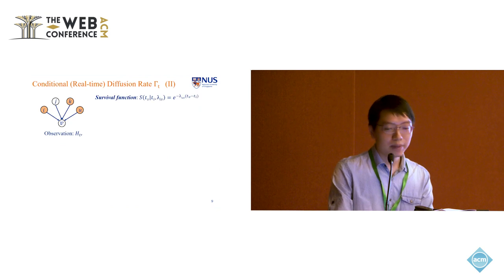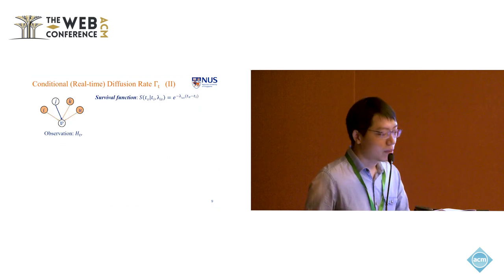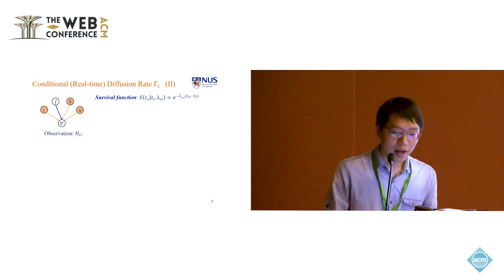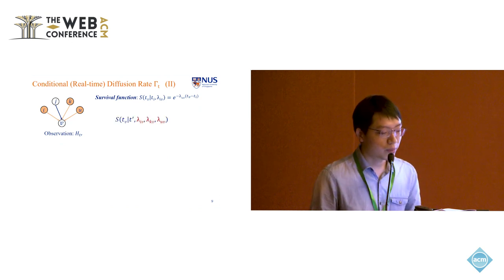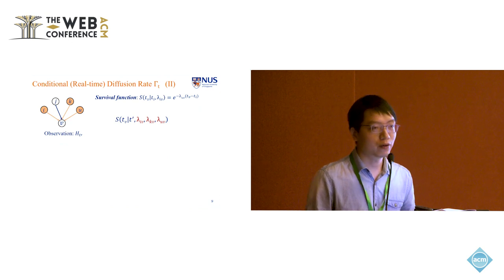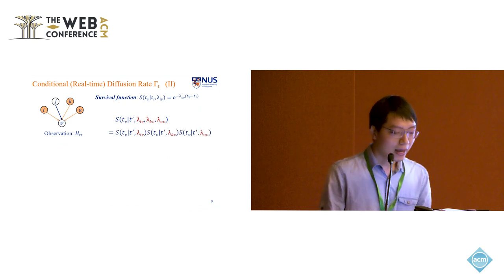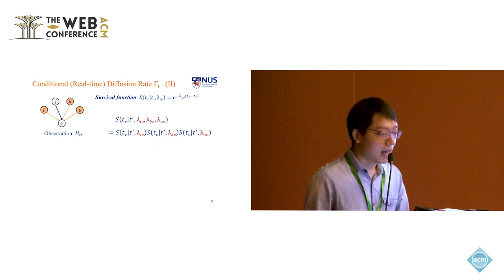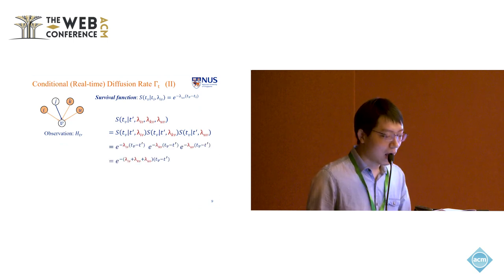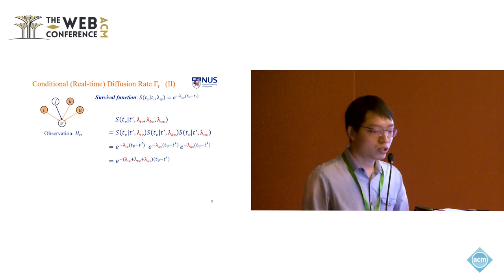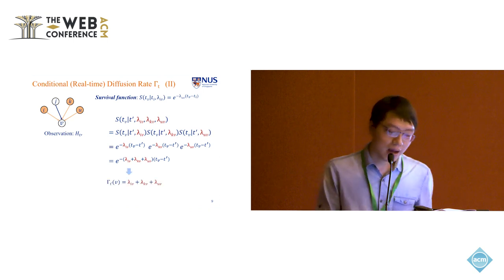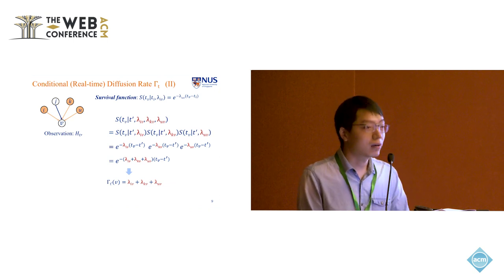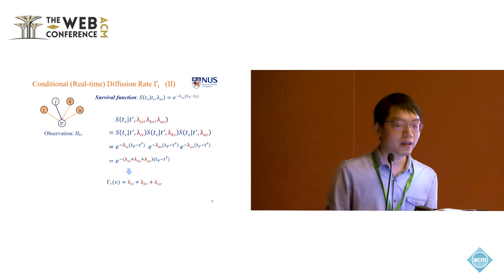So based on this knowledge, we now consider that several neighbors infecting node v simultaneously. And here we try to calculate the probability that node v survived from its three infected neighbors. The probability is a time that it survived from its neighbors i k v. And we reach the conclusion that at this moment, the conditional diffusion rate would be the sum of the diffusion rate of its infected neighbors.